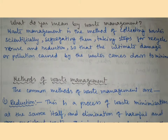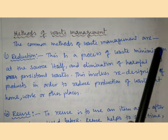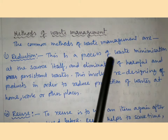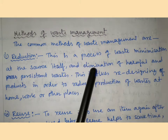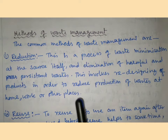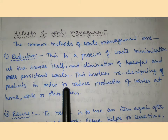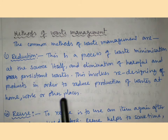The common methods of waste management are: reduction, reuse, recycling, and refuse. Reduction is the process of waste minimization at the source itself and elimination of harmful and persistent waste. This involves redesigning products in order to reduce production of waste at home, work, and other places.